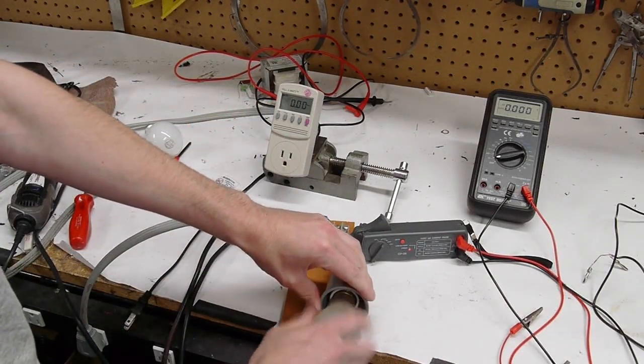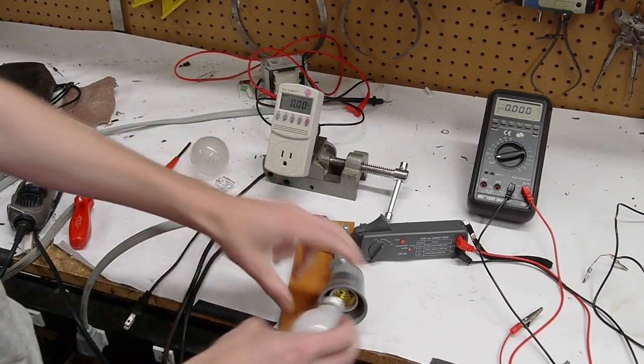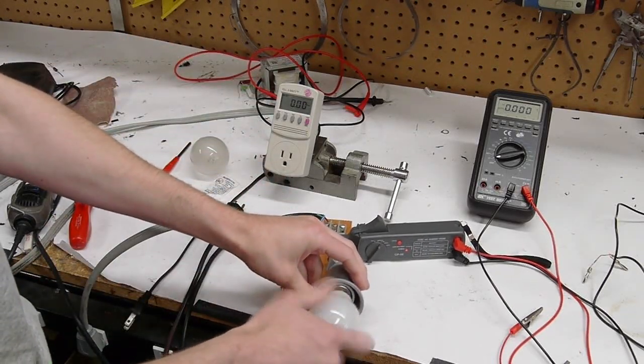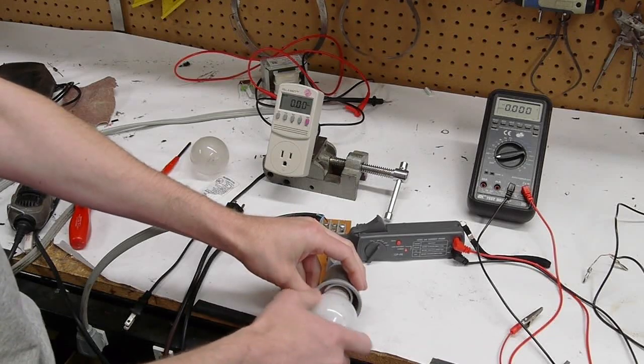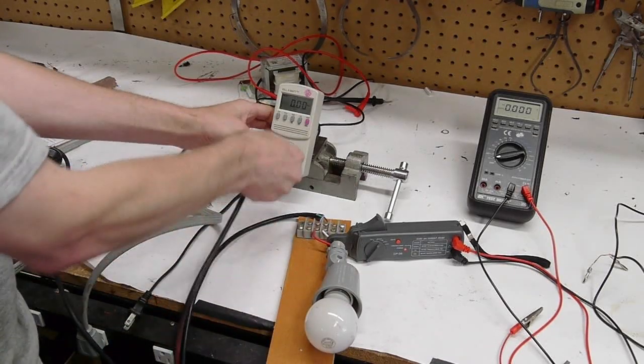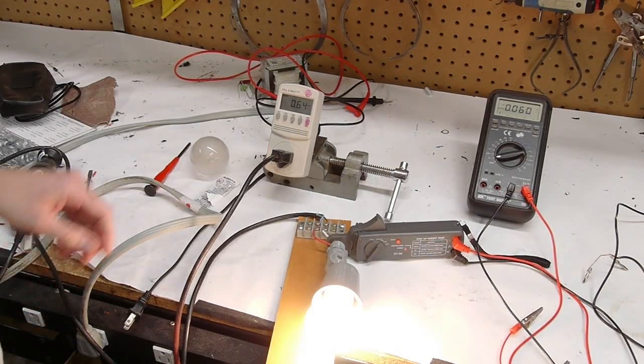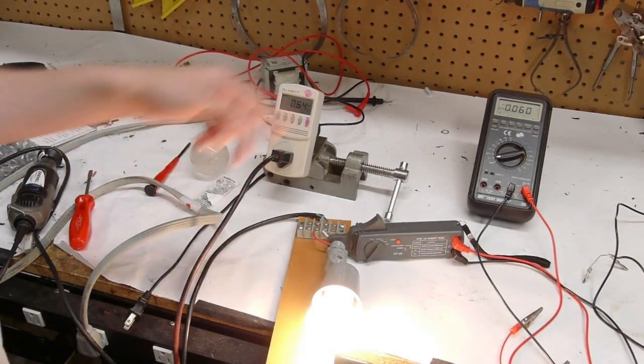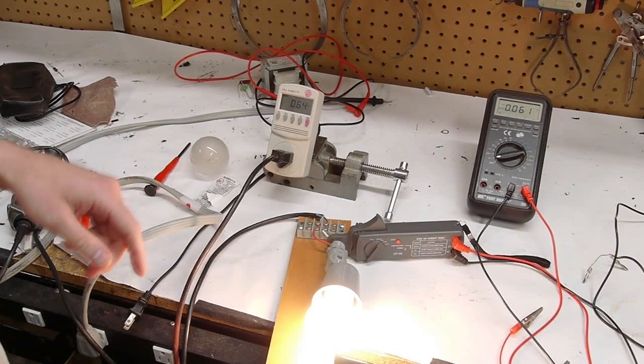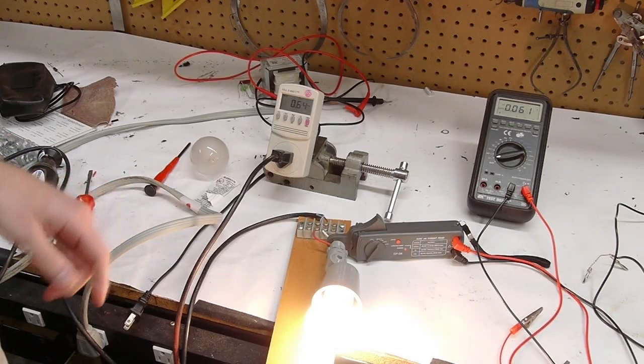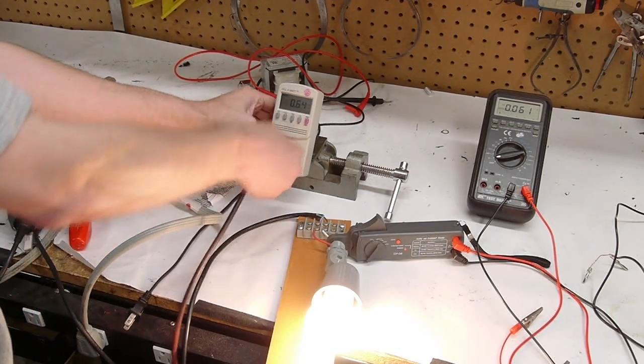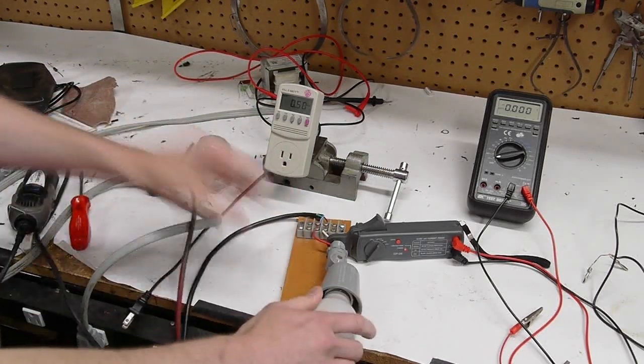Try a bigger bulb. This is a 75 watt bulb. 0.64 on the kilowatt and 0.6 on the probe there. Pretty good, not bad.